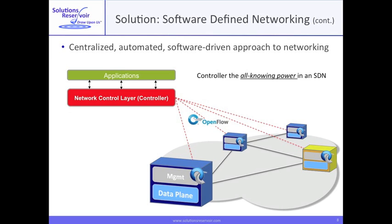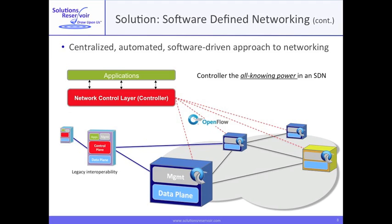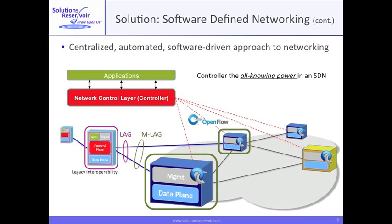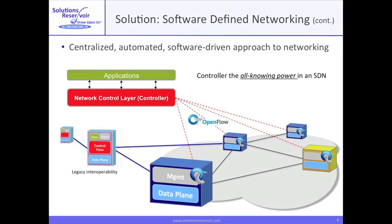SDN's uptake will be evolutionary, so a software-defined network will interoperate with legacy networks. An interesting attribute of an SDN is that the whole network can appear as a single switch to an adjacent network or switch. For example, two switches could run MLag and appear as a single switch to the legacy switch. The controller could also manage the legacy equipment via SNMP.